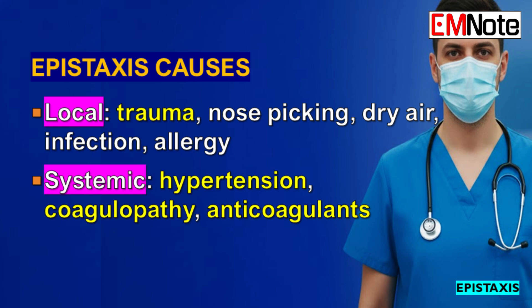Then there are the systemic causes — the ones that really drive recurrence and severity. Systemic issues fall into two buckets: circulatory and coagulatory. Hypertension is number one — high blood pressure puts a ton of stress on those little nasal arteries, making them more likely to rupture and much harder to clot once they do. For coagulopathies, this could be an inherited disorder like hemophilia or an acquired problem like severe liver disease, but most often in adults it's medication-induced — anticoagulants and antiplatelet medications. A patient on warfarin or a direct oral anticoagulant with a nosebleed raises the stakes immediately.